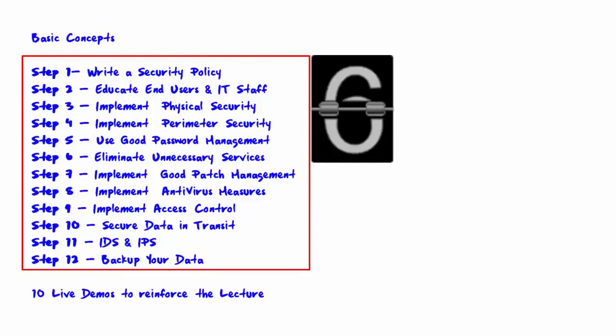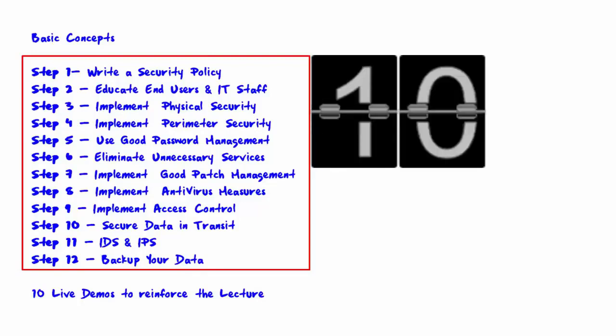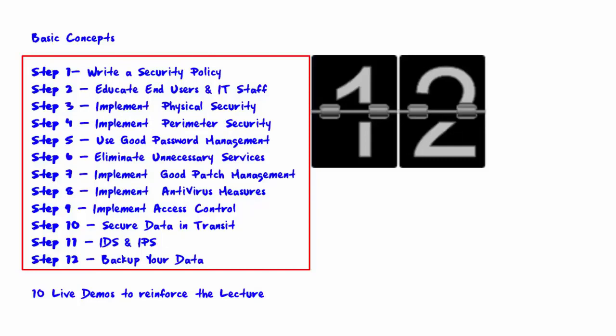Step six: eliminate unnecessary services. Step seven: implement good patch management. Step eight: implement antivirus measures. Step nine: implement access control. Step ten: secure data in transit. Step eleven: IDS and IPS. Step twelve: backup your data.